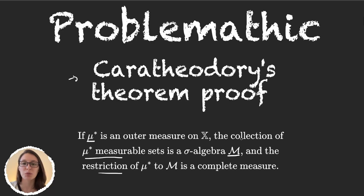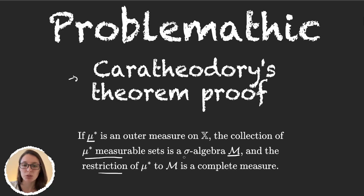If you don't remember what any of these concepts mean, then just go back to the playlist and check out the previous videos. For this video, it will be the first part in the proof because it's quite long, and what we will do is prove that M is a sigma-algebra — that is, the set of all μ*-measurable sets forms a sigma-algebra.